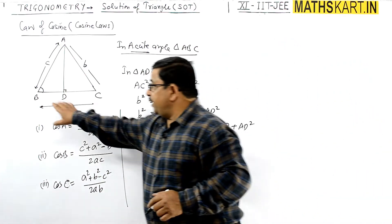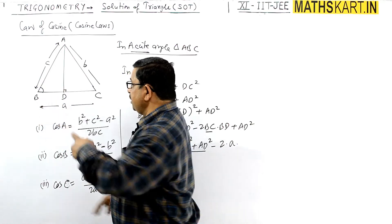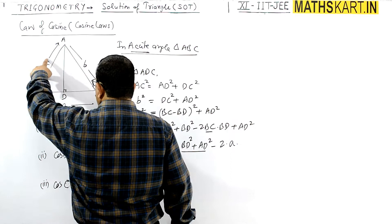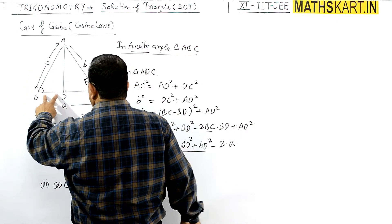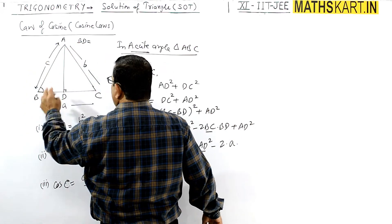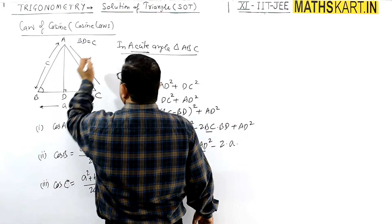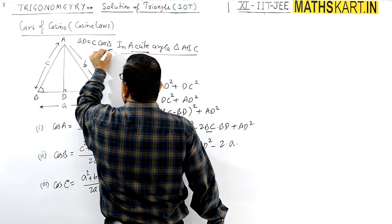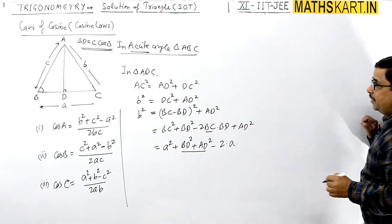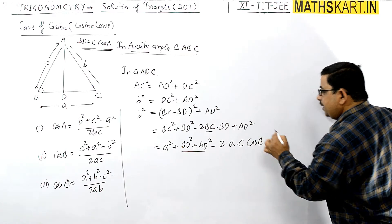Now BD can be written as C·cos B. This is because side C is resolved, and the projection of AB onto BC gives BD = C·cos B. So we substitute BD = C·cos B into the expression.